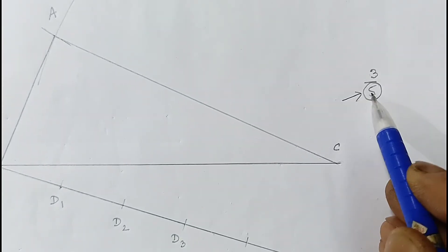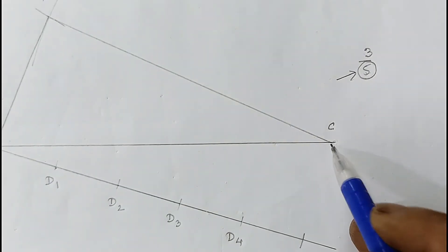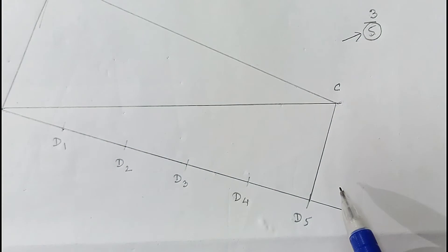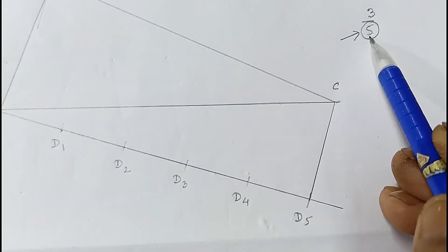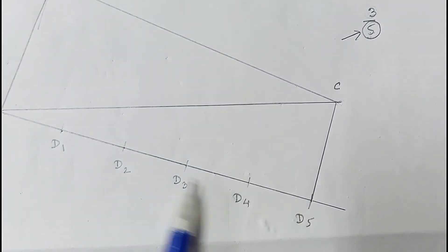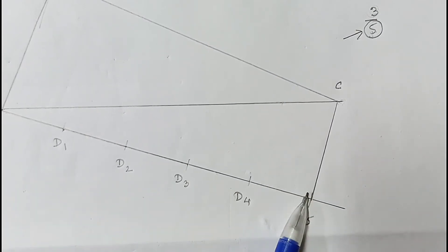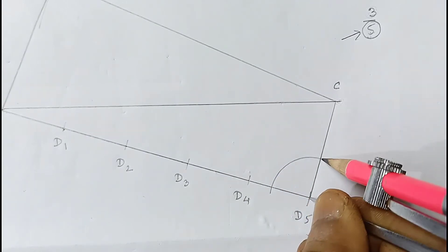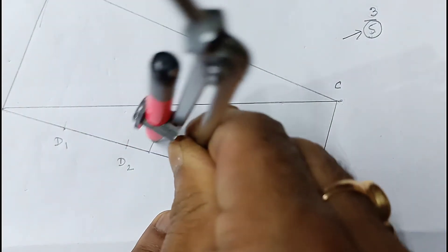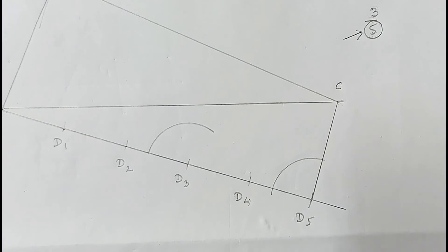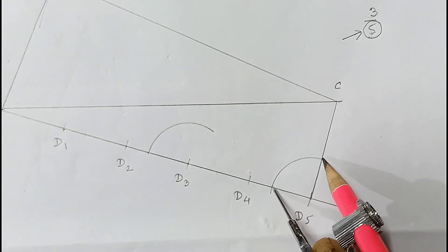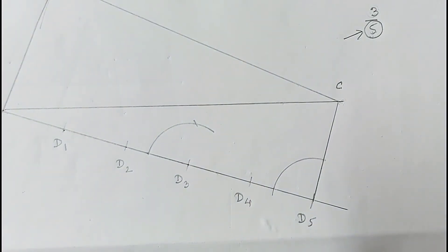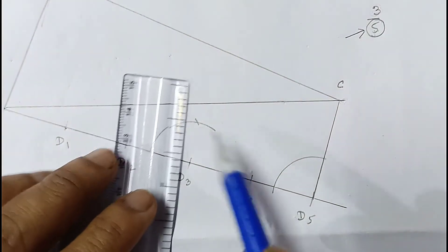The value in the denominator is 5, so we join point D5 with C. Now we draw an angle at the third point D3 equal to the angle at D5. Taking any radius, draw an arc from D5, then with the same radius from D3 draw another arc. Measure the chord distance and cut the same distance from D3 to get the parallel direction.